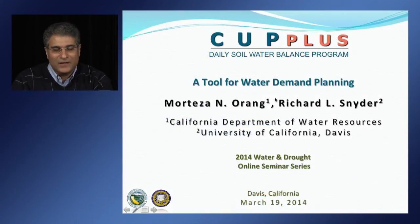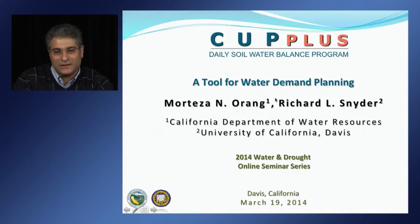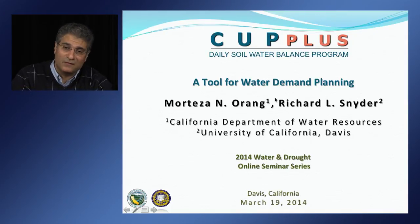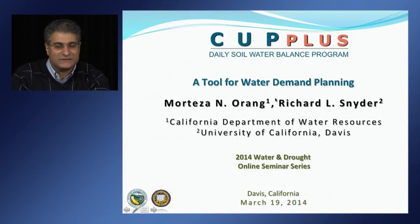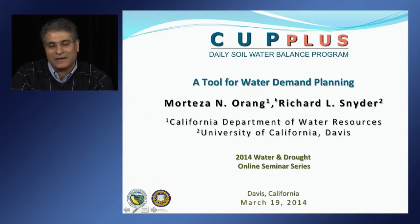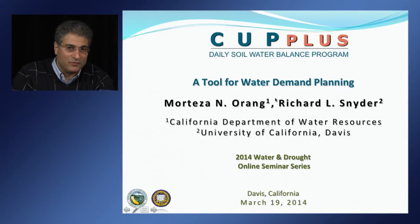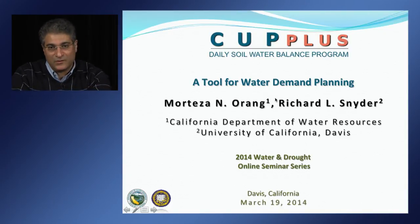Hello, my name is Mori Orang. I am with the California Department of Water Resources, Division of Statewide Integrated Water Management, Water Use and Efficiency Branch. I am responsible for managing the water use program.